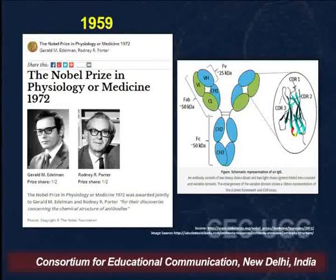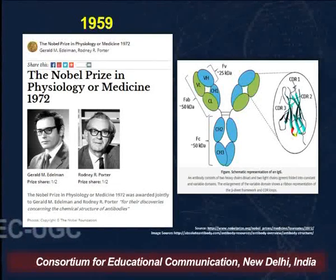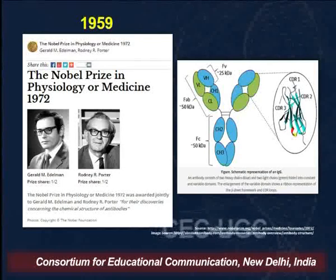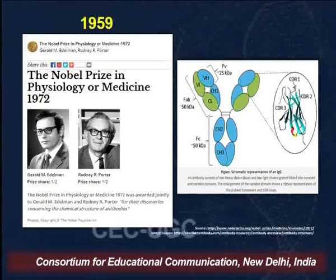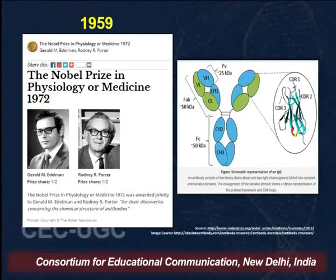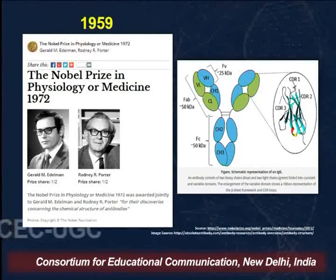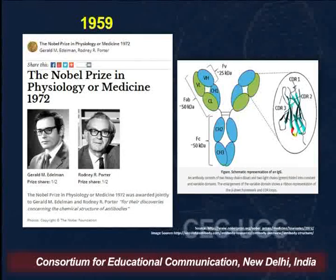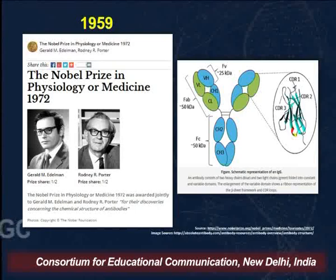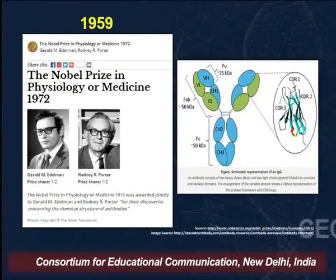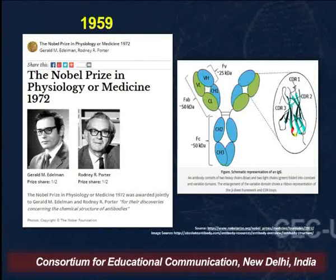The next important discovery in biotechnology was in 1959 by scientists Edmund and Porter, who discovered the structure of antibodies and subsequently received the Nobel Prize in Physiology or Medicine in 1972. The antibody structure contains two chains: the heavy chain and the light chain. Each part has a variable region and a constant region, segmented into the FC region and the upper part. This discovery of antibody structure led to the discovery of many subsequent diagnostic kits and diagnostic processes.